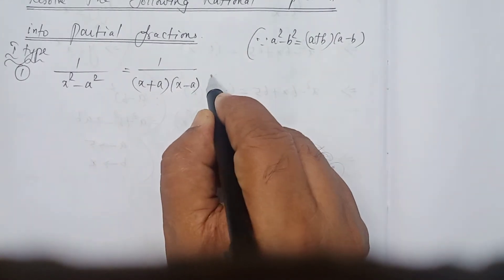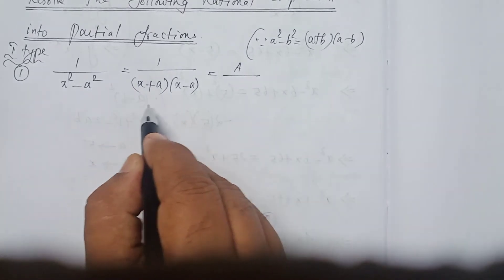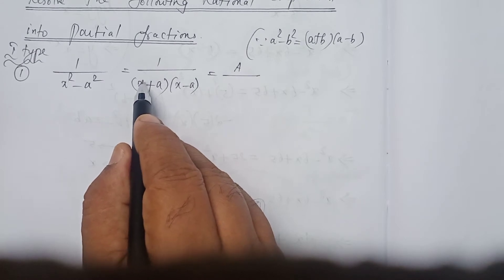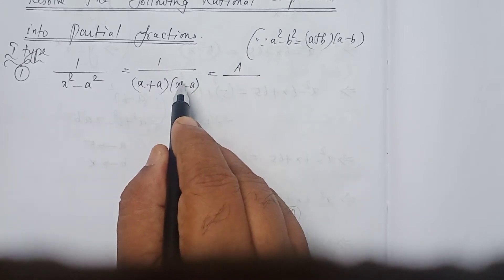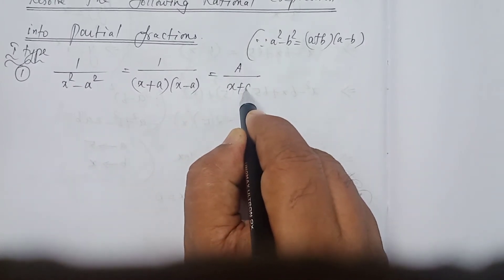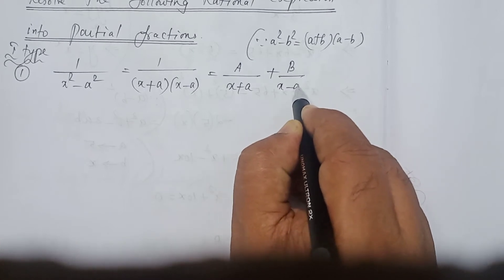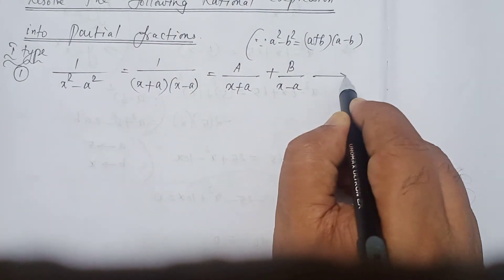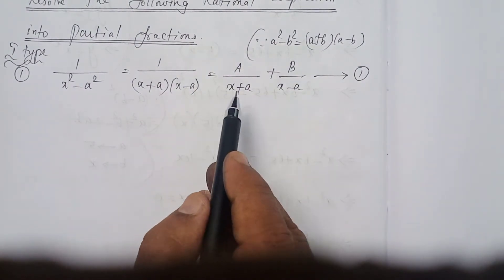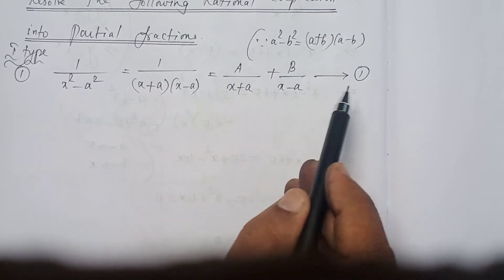Now, that is equal to A divided by the first linear factor plus B divided by the second linear factor. They are called linear factors because the power of x is 1 in both. So: A divided by (x plus a) plus B divided by (x minus a). Let this be equation number 1. We have to find out the values of A and B, and those values should be replaced back in equation number 1.